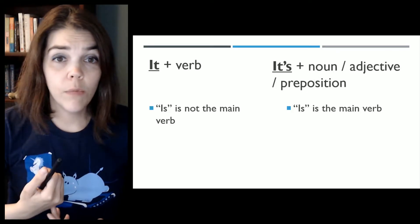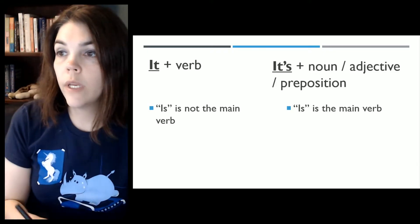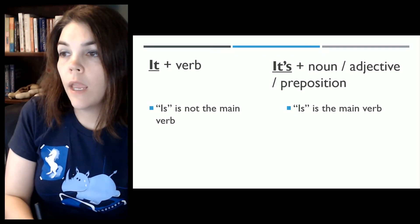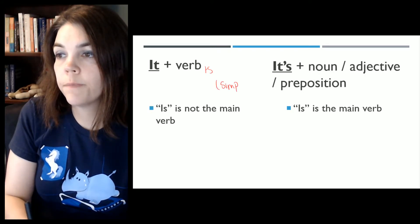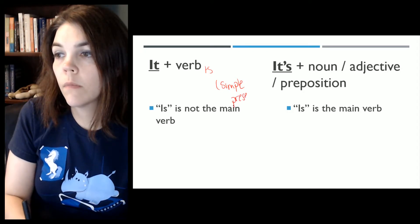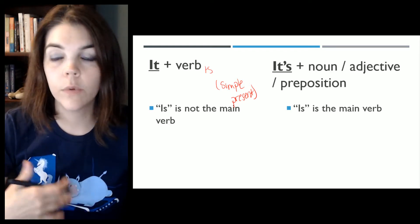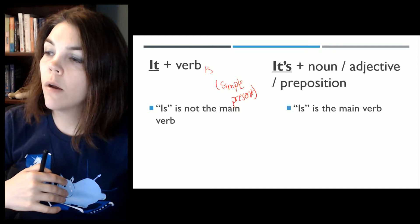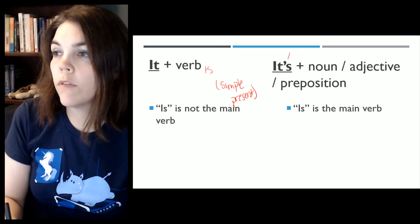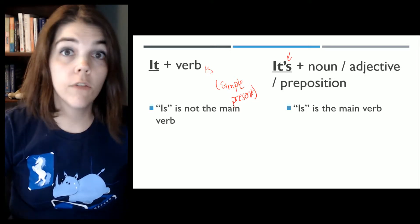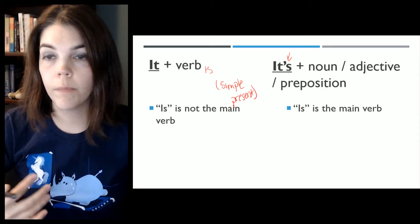If you can remember that, you have it. So it plus a verb that is not is, you're going to have the verb plus s assuming that you're in simple present. If you're talking about the past, you're going to have it depended or it meant or something like that. So when you have is as the main verb, then you have your apostrophe like this. It's the book. It's nice. It's easy. It's under. It's over.